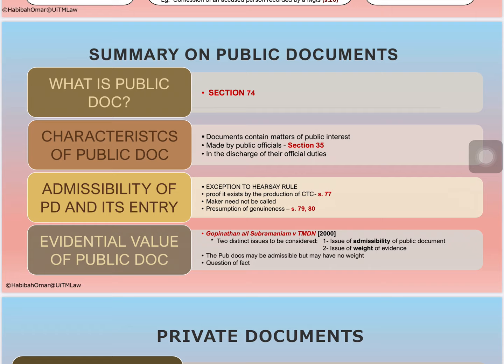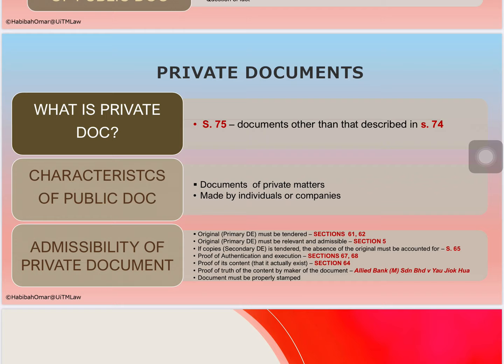The case of Goffrie Nathan establishes that when dealing with public documents, there are two distinct issues to consider. First, the admissibility of the public document — if a document is relevant under section 5 and satisfies the definition of section 74, it can be tendered as a public document. Second, the issue of weight — a document may be relevant and admissible, but at the end of the day, the court determines how much weight to put on that particular document, which is very much a question of fact.